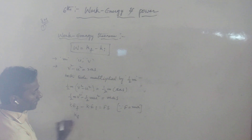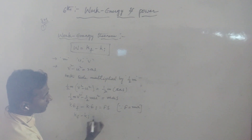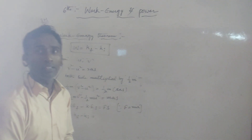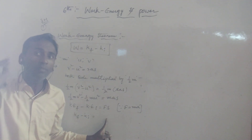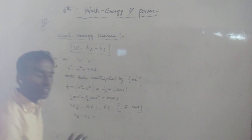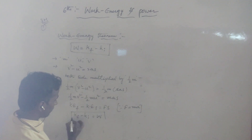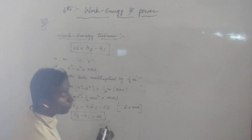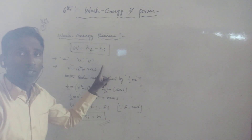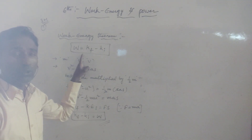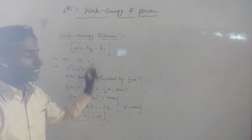The final kinetic energy KF minus KI is equals to, according to the work definition, from that formula we have to write F·S. F·S means nothing but W. Hence we proved that equation — work is equals to the difference between final kinetic energy and initial kinetic energy.